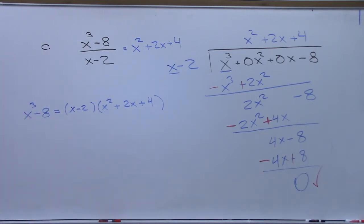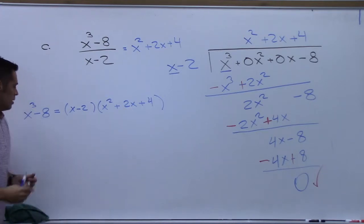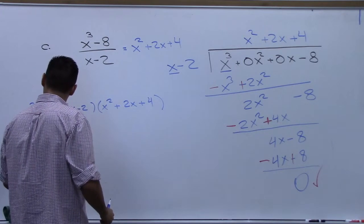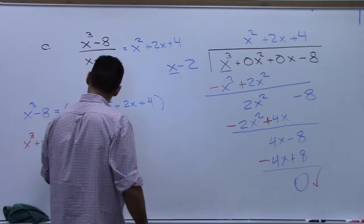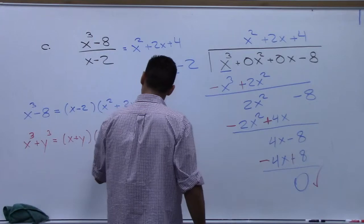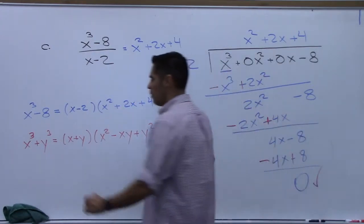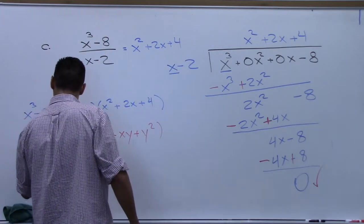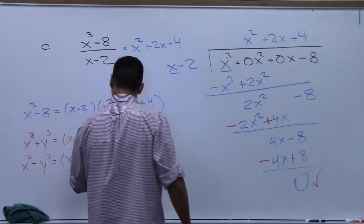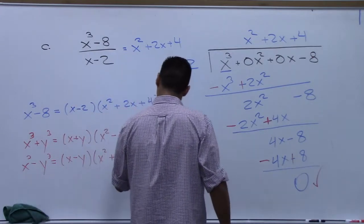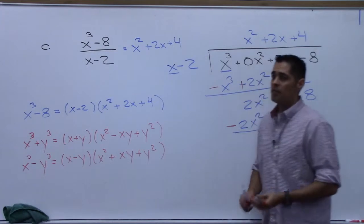That's exactly what you would get had you noticed this was a difference of cubes and used the difference of cubes formula. How many of you remember there's a difference of cubes formula and a sum of cubes formula? I'll just write it down. x cubed plus y cubed equals x plus y times x squared minus xy plus y squared. That's the formula for the sum of cubes. The formula for a difference of cubes is similar.